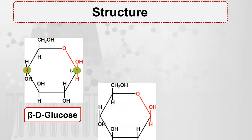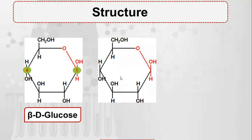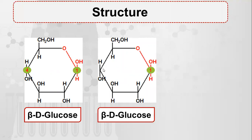If we look at the second glucose molecule, this is beta-D-glucose — this is carbon number one and this is carbon number four. Carbon number one's OH is on the upper side, and carbon number four's OH is on the lower side, so they can form a bond this way, with this oxygen forming the linkage.